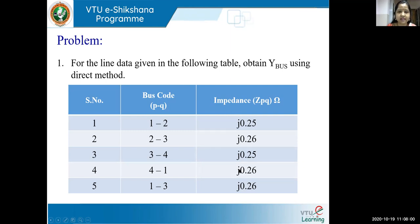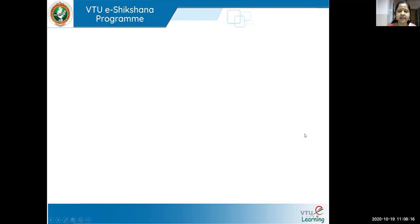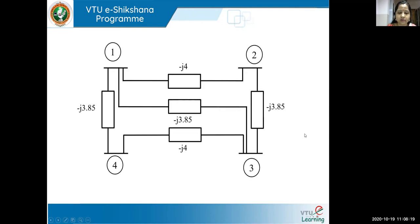In a hurry, students directly take the values and jump into Y bus formation — please look at the table properly. If the data is given in the form of impedance, the first step is to convert those respective line impedances into admittances. I have drawn the network by taking the inverse of the individual impedances, so when you take the inverse you get minus j values. The network shows connections one to two, one to four, one to three, two to three, and three to four.